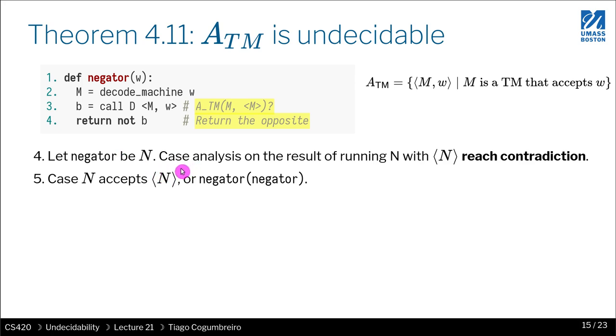What we're going to do is we're going to check what is the result of calling N with these, whenever you see the brackets, that means the code of. So that's the code of N. So we're going to run N with the code of N, and we're going to reach a contradiction.